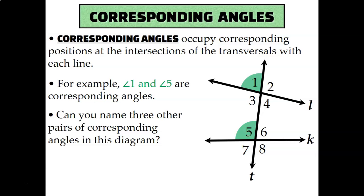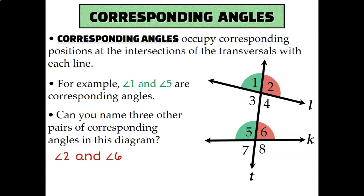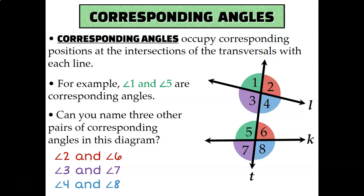Corresponding angles occupy the same position out of the four angles created by the intersection of the lines. When line L and line T intersect, they make four angles, and when line T and line K intersect, they also form four angles. If the angles occupy the same spot — like angle 1 is in the top left-hand corner and angle 5 is also in the top left-hand corner — that makes them corresponding angles. There are four pairs: angle 1 and 5, angle 2 and 6, angle 3 and 7, and angle 4 and 8.